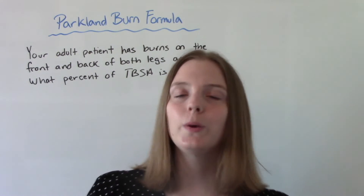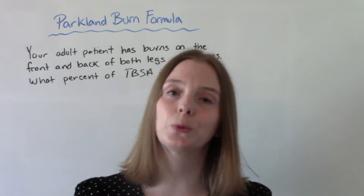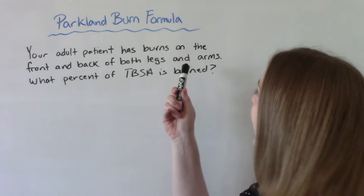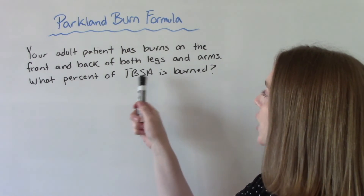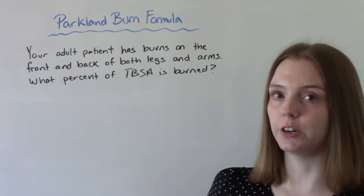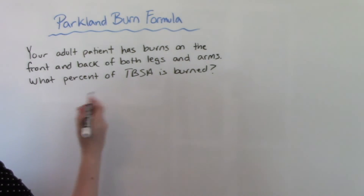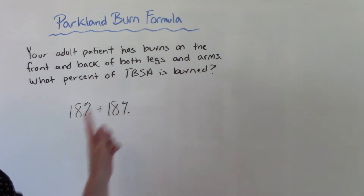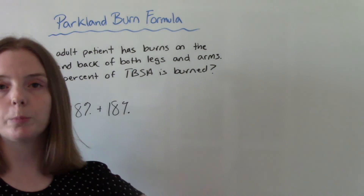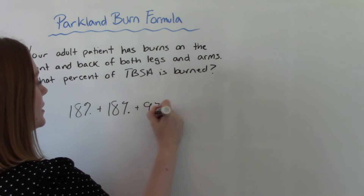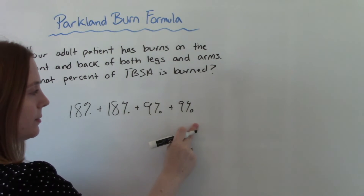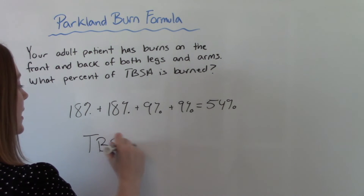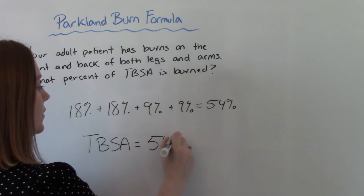Now let's do an example when it comes to determining total body surface area using the rule of nines. We have an adult patient who has burns on the front and back of both of their legs and both of their arms. Using the rule of nines, each leg front and back totals 18 percent, so left leg plus right leg is 18 plus 18. For the arms, each arm front and back is 9 percent, so left arm plus right arm is 9 plus 9. Their total body surface area that is burned is 54 percent.